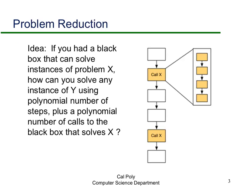Problem reduction: can you take a problem you have a good efficient solution for and use it to solve another problem efficiently? Think of a black box that solves problem X. An algorithm for problem Y might consist of some simple polynomial-time steps plus calls to the solver for X. If X is solvable in polynomial time, then Y will also be solvable in polynomial time.